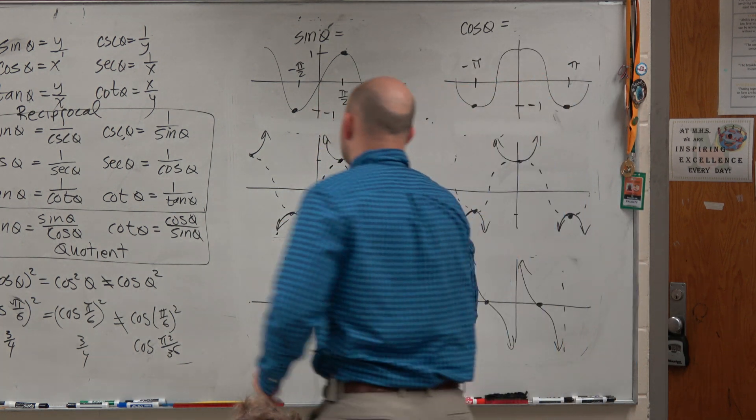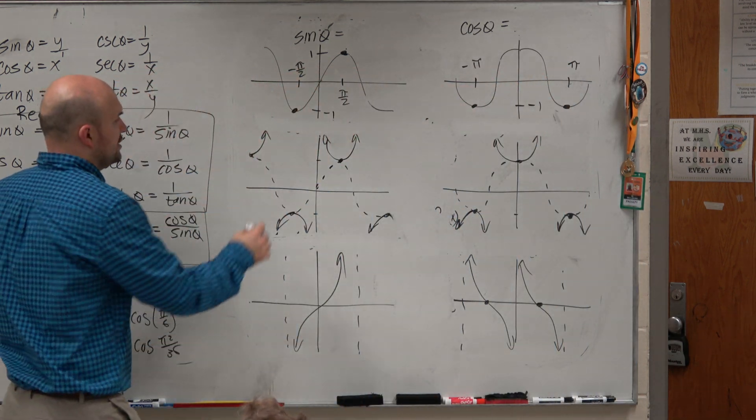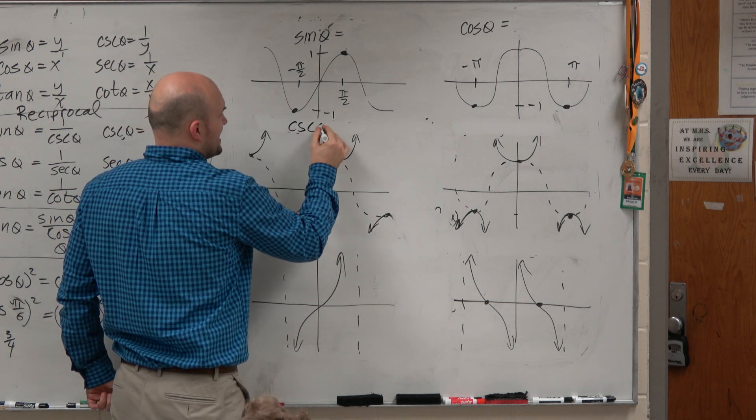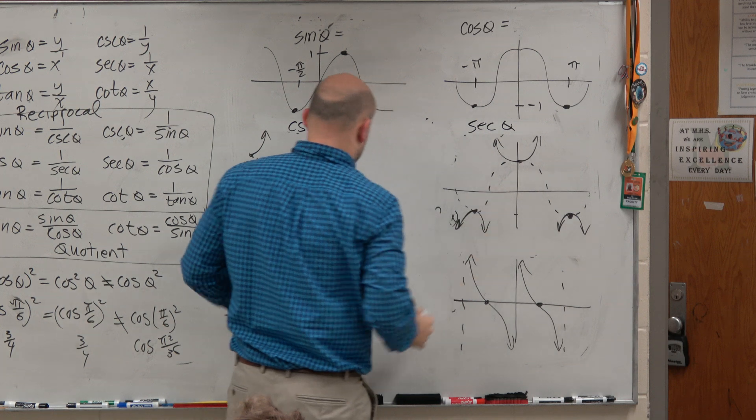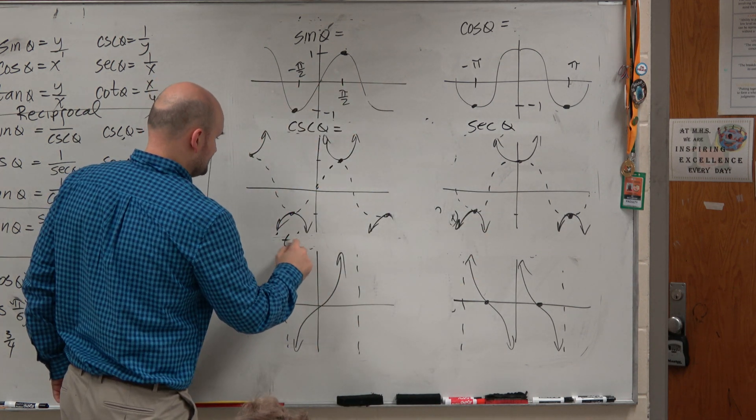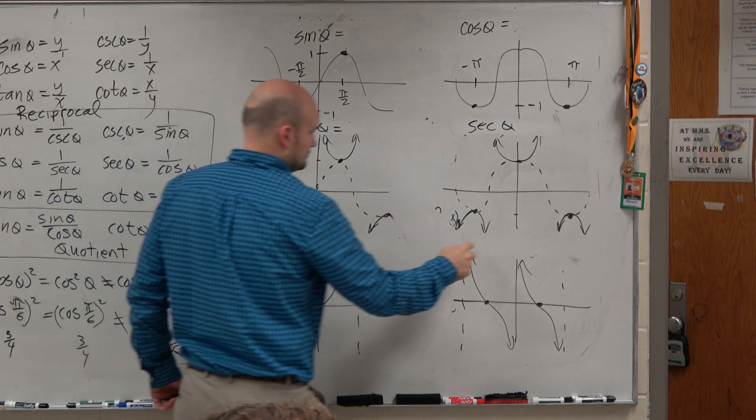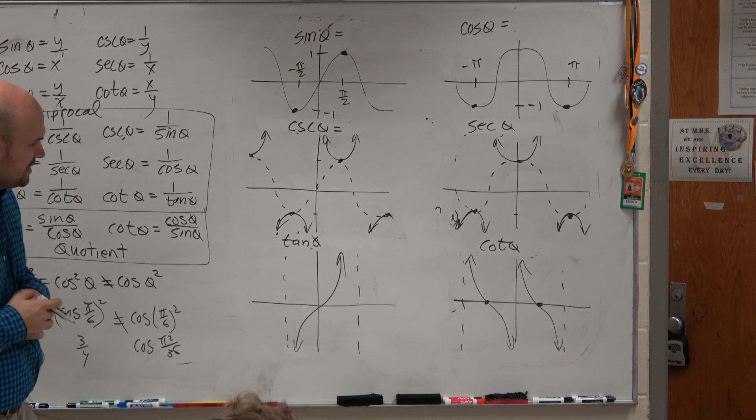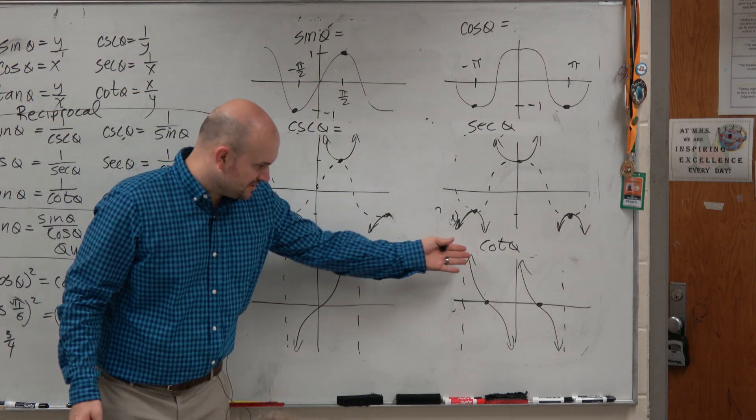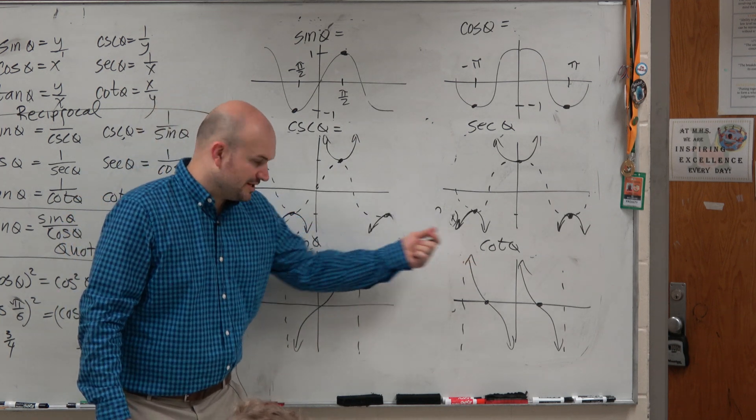So since sine and cosine are related to cosecant and secant, those are going to be the same. So maybe we can get some advice from tangent. So let's go and look at cotangent and tangent. So to go from tangent to cotangent, obviously, this has one period. That has two periods. You guys can see.